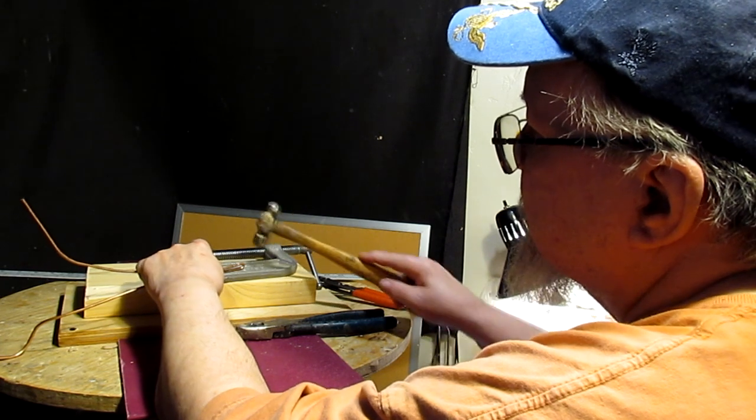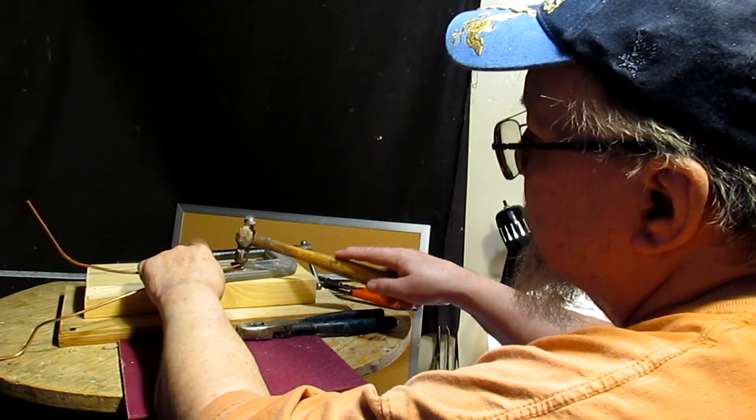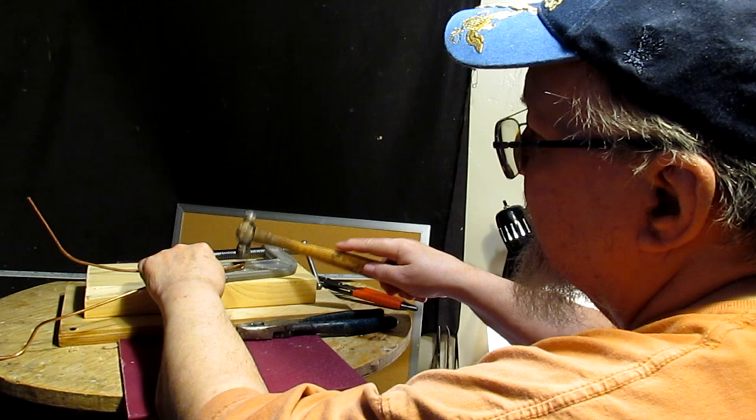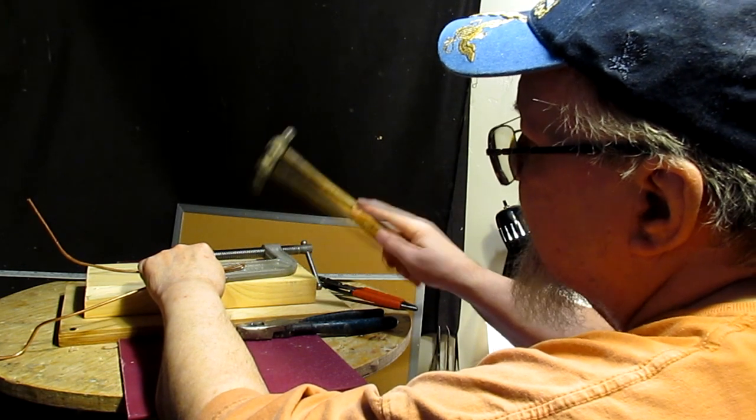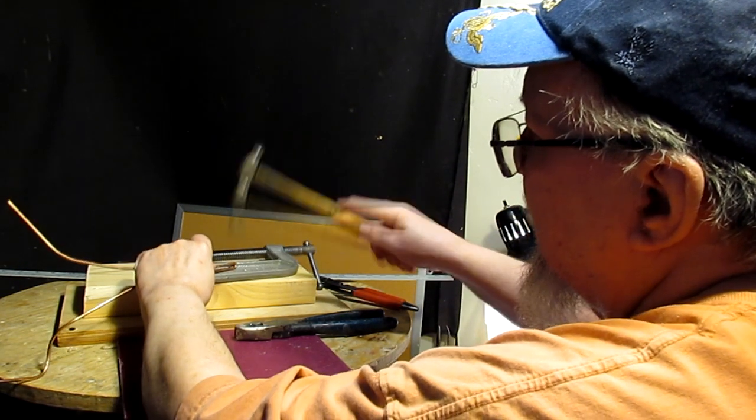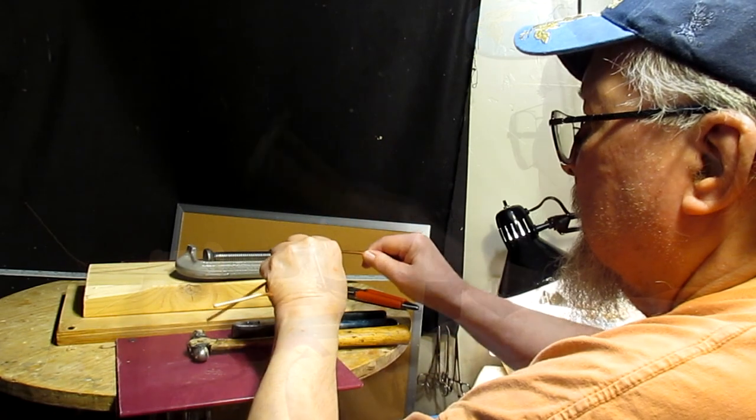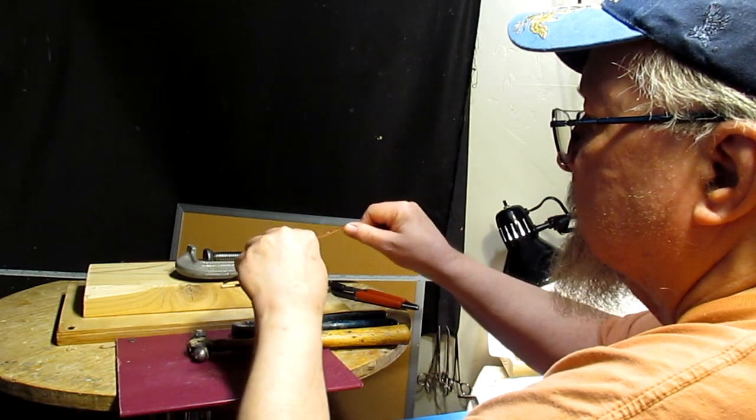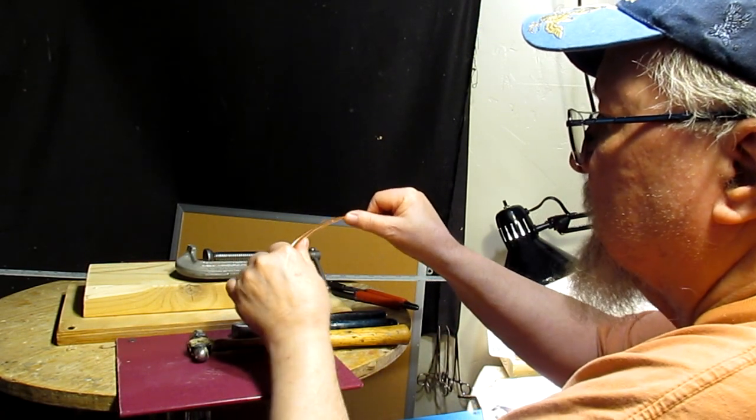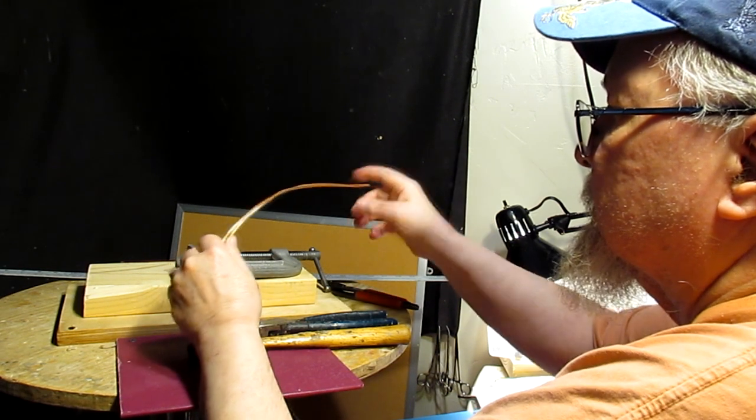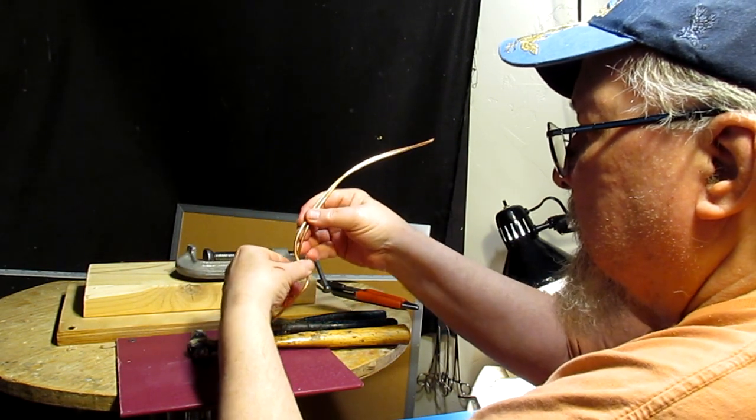I'm going to use a C-clamp as a blacksmith anvil. I just want to double this wire only because I want some extra strength in the wire.